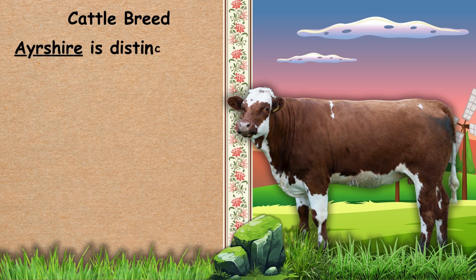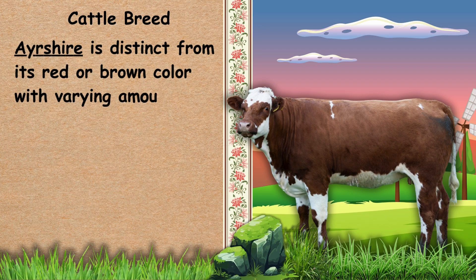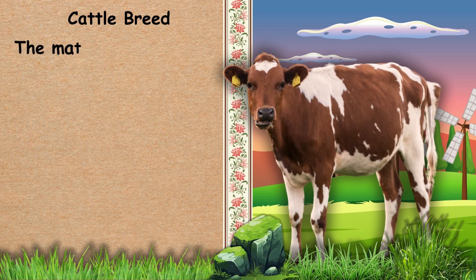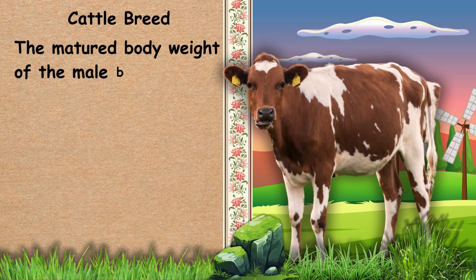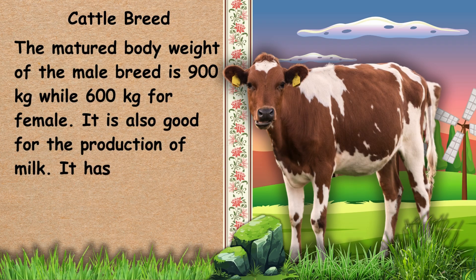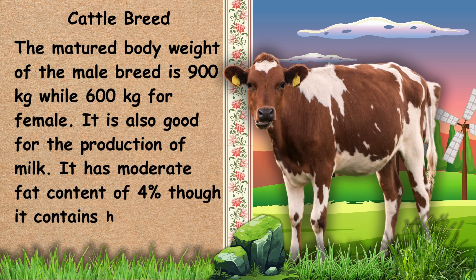Next, we have Ayrshire. Ayrshire is distinct from its red or brown color with varying amounts of white. It has large horns with an upward curve. The matured body weight of the male breed is 900 kg while 600 kg for female. It is also good for the production of milk, with a moderate fat content of 4.4% though it contains high protein.